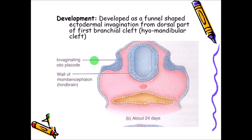The external acoustic meatus develops as a funnel-shaped ectodermal invagination from the dorsal part of the first branchial cleft, originating from the otic placode.